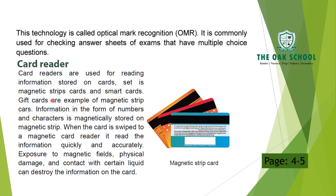Gift cards are an example of magnetic strip cards — they are also magnetic strip cards. Information in the form of numbers and characters is magnetically stored on the magnetic strip. These numbers and important characters are stored in the magnetic strip.